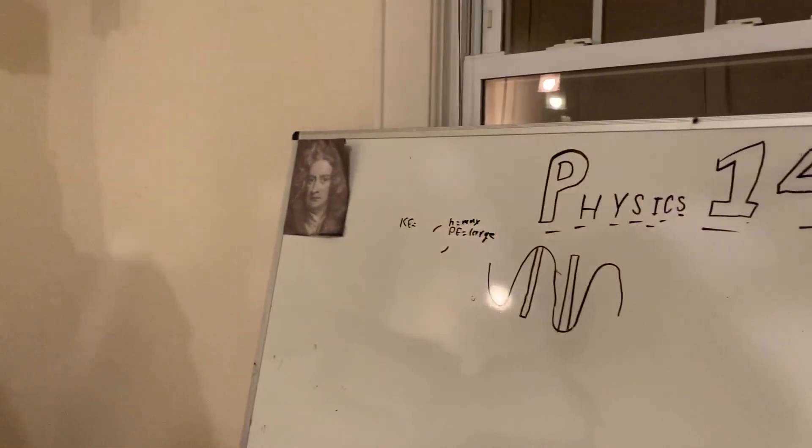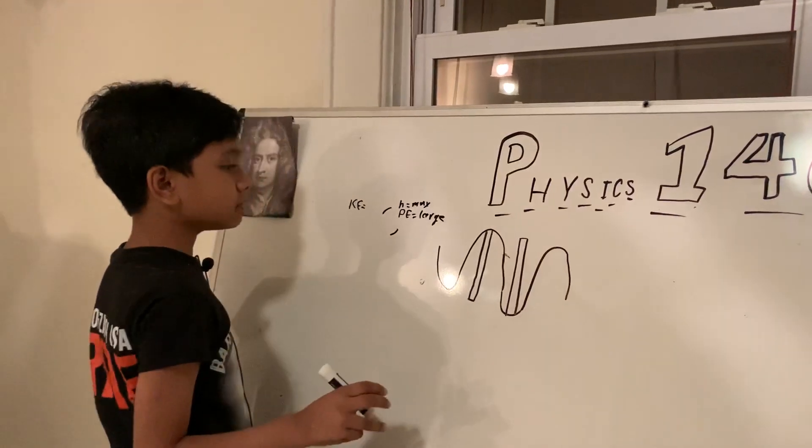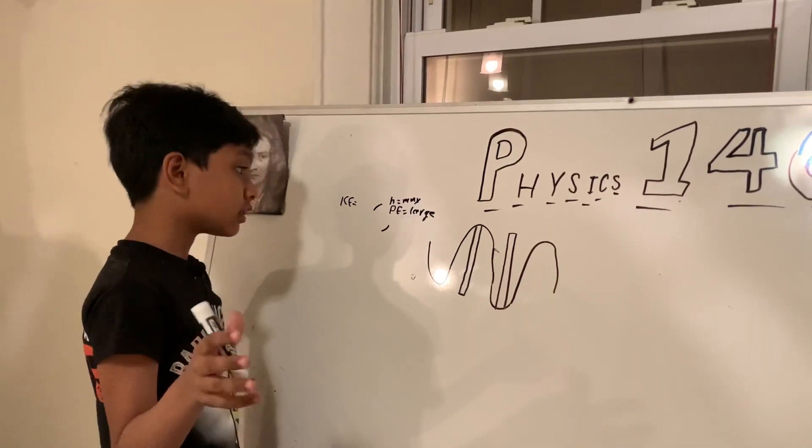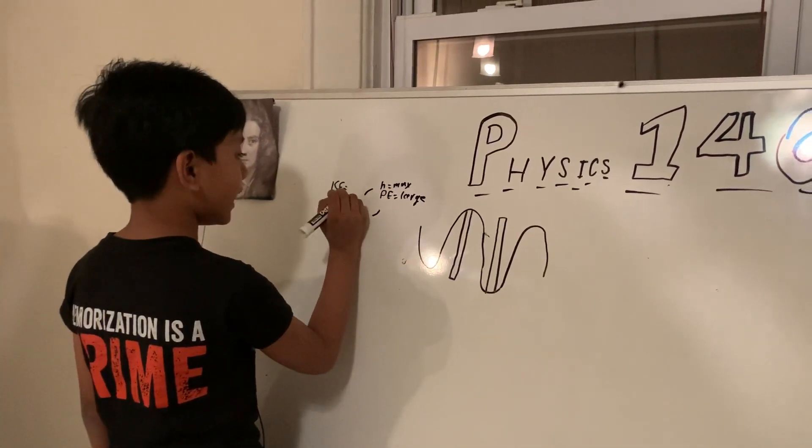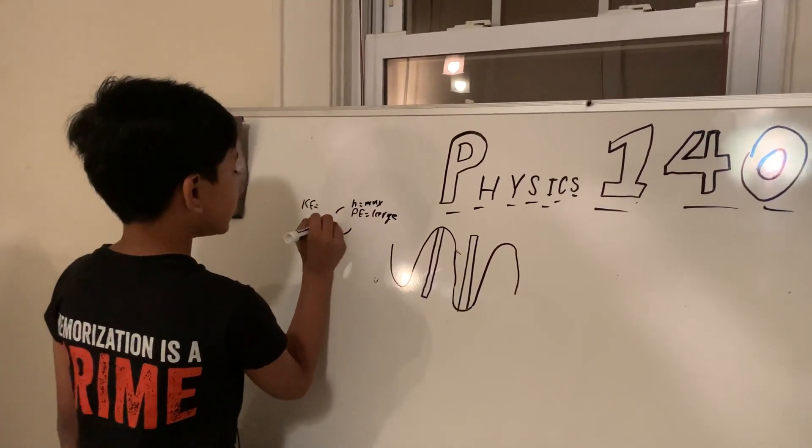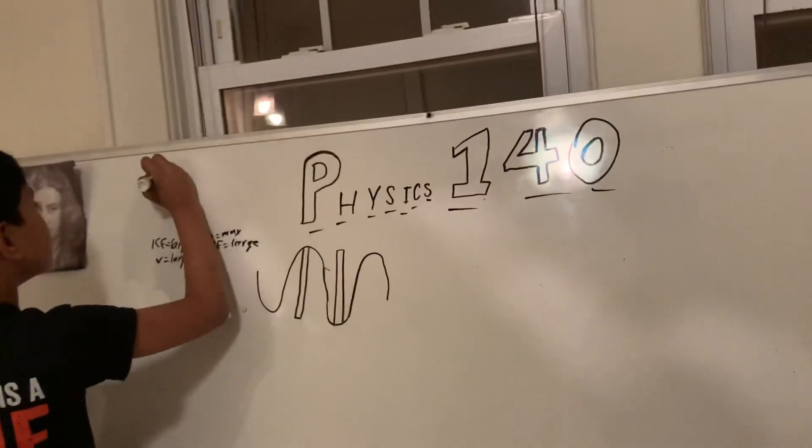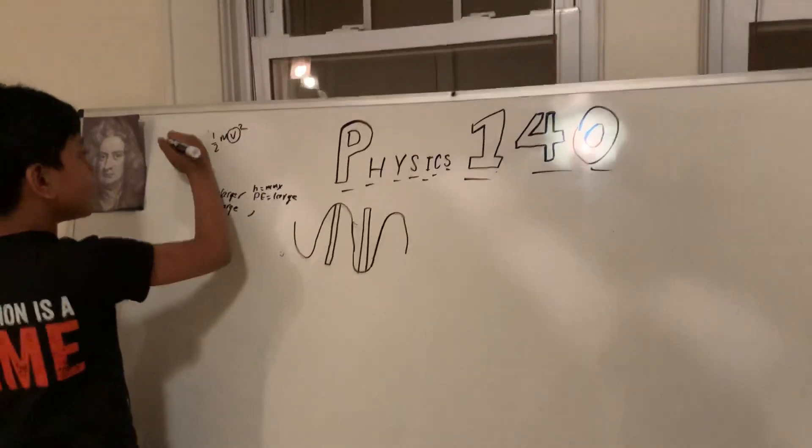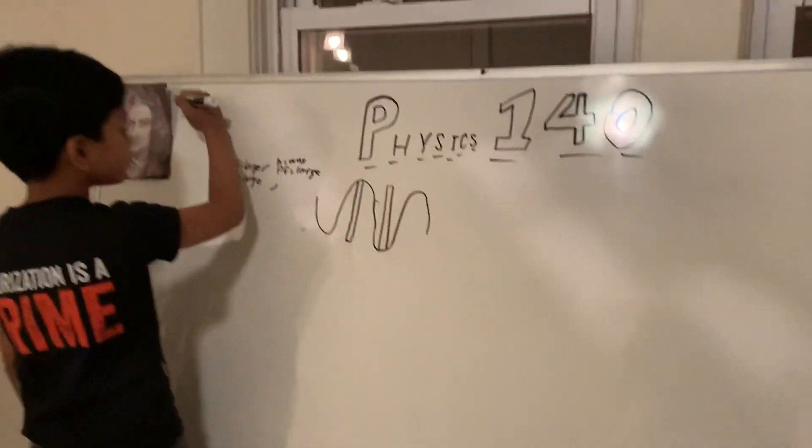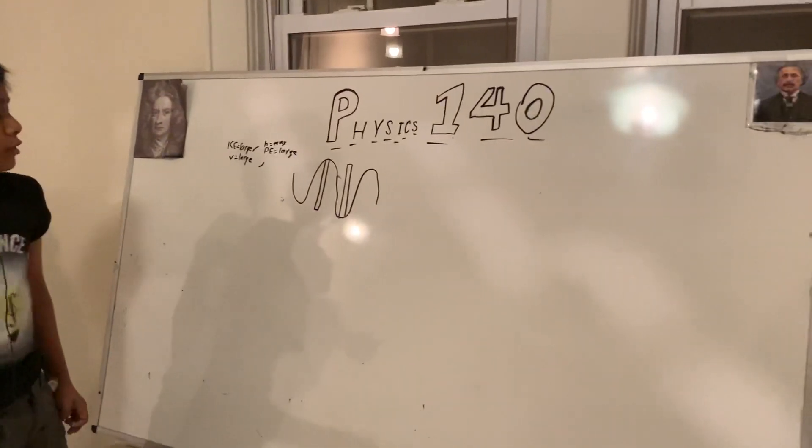So the velocity just starts rocketing in. So velocity is large, meaning KE is also large. Since we know that this is V, it must be, you know. Well, KE is always proportional to V in some way.